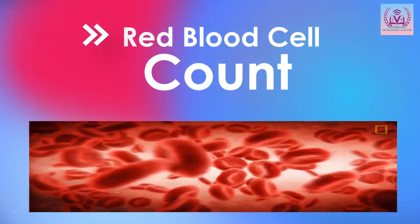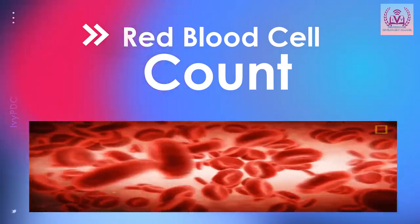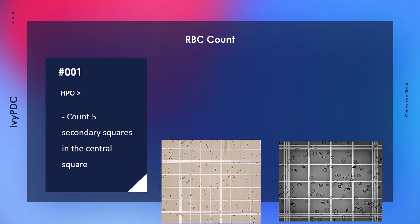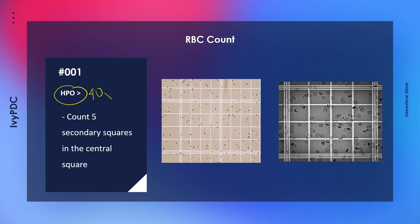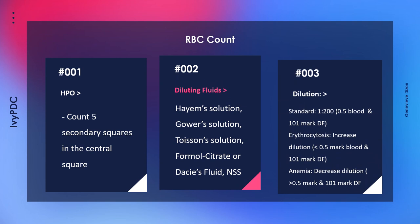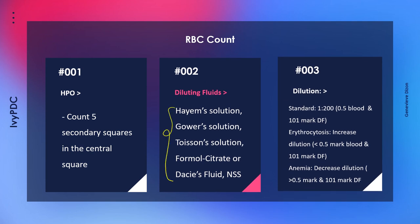Let's now proceed with sample computations for the red blood cell count. When counting red blood cells, we use the high power objective so we can see the RBCs clearly in the secondary squares of the central square. For the diluting fluids, any of several fluids may be used for RBC count, with Hayem's being the most commonly used. The diluting fluids for red blood cells are isotonic so that the RBC membrane is preserved and the red blood cells do not lyse.